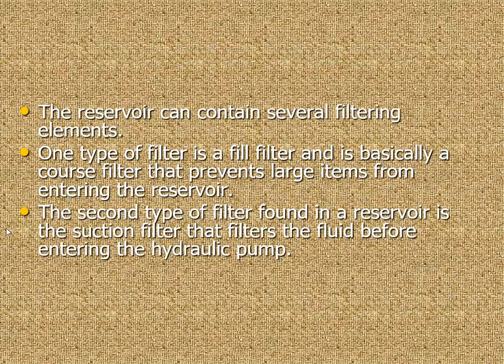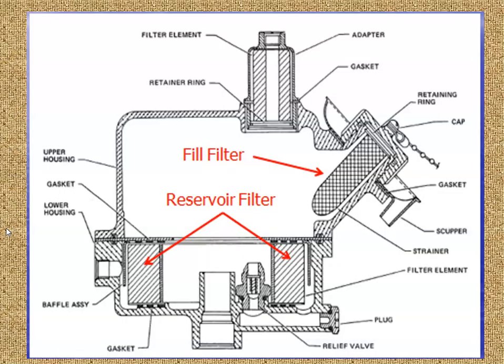The reservoir can contain several filtering elements. The type of filter and fill filter is basically a coarse filter. So you usually have an inlet screen or you have something very coarse. And sometimes you'll have a second type of filter in the reservoir. You could have that second filter located someplace else in the hydraulic system. Here we have a picture of a reservoir and you can see there's a fill filter. This is kind of like a screen here. And then they have an additional filter down lower in the reservoir.